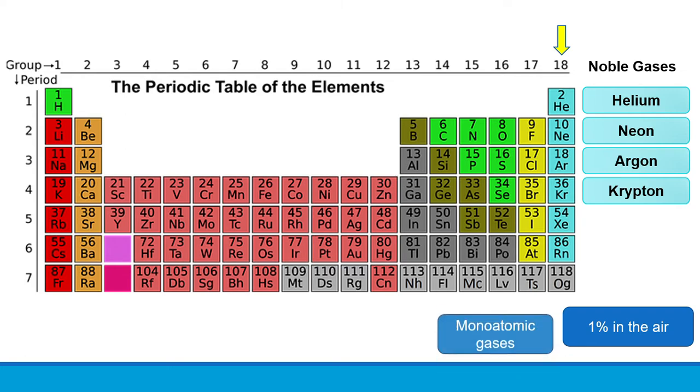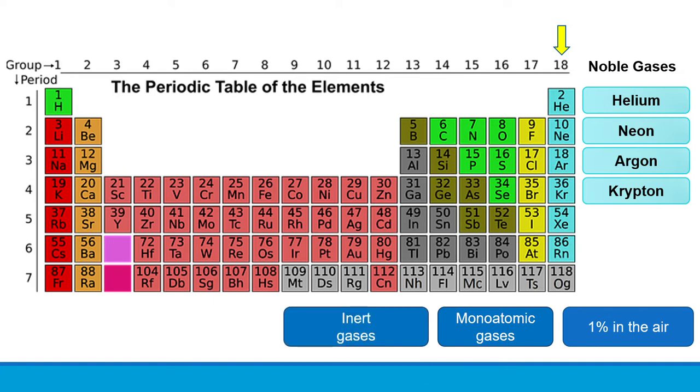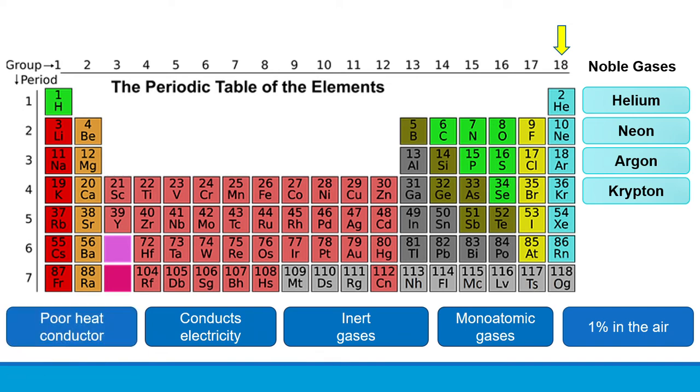They exist as monoatomic gases meaning they don't exist as molecules. Besides they have low reactivity which is why they are also known as inert gases. Noble gases conduct electricity but are poor heat conductors.